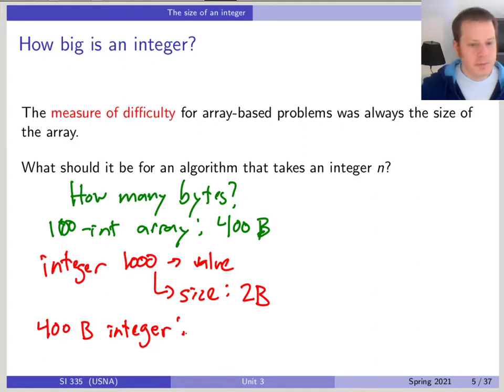It would be as large as two to the 400 times eight, because 400 bytes, each byte is eight bits. So that means that's going to be 3200 bits. So that's about two to the 3200. That is a literally astronomically large number. In fact, it's beyond astronomically large. I think if you counted the number of atoms in the universe times the number of Planck moments since the Big Bang, it would not be as large as two to the 3200.